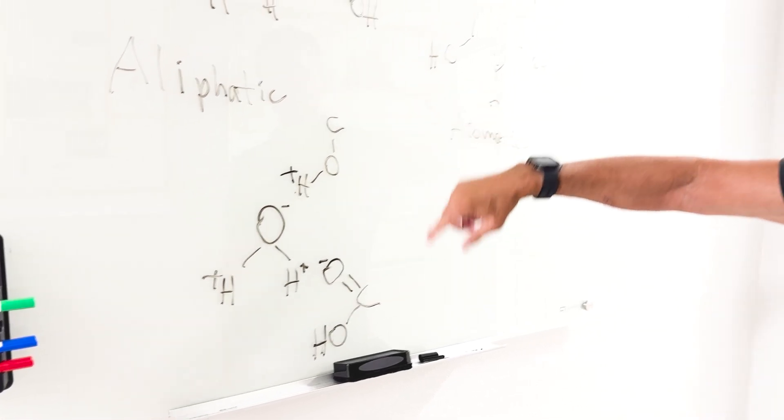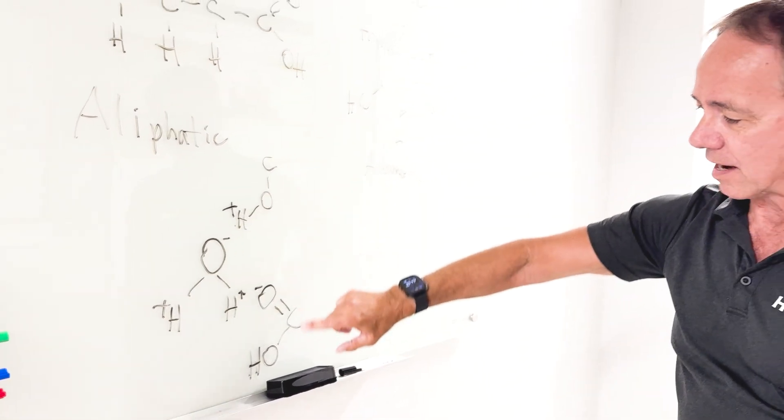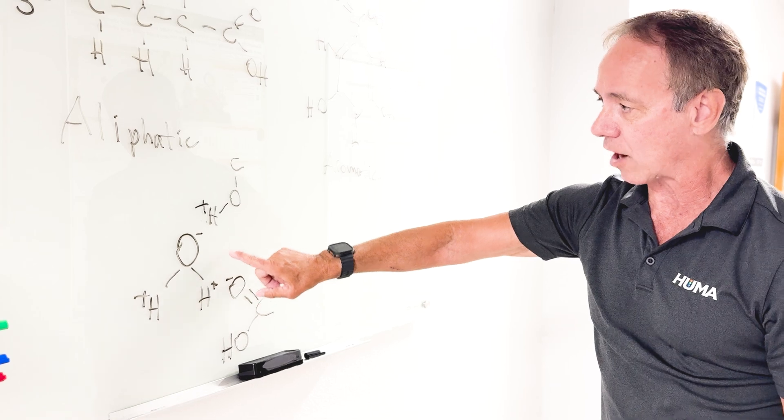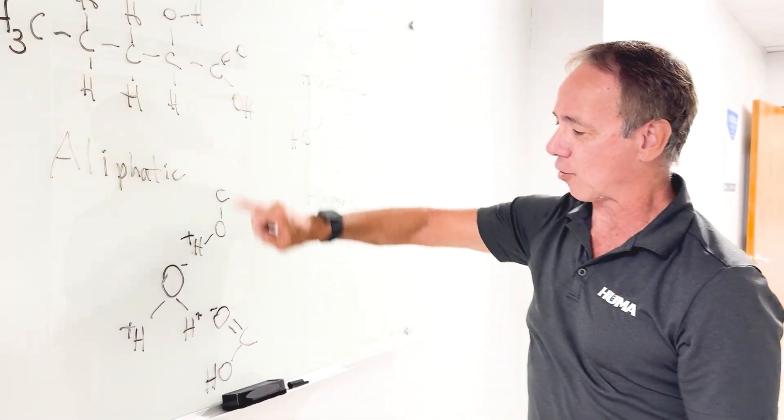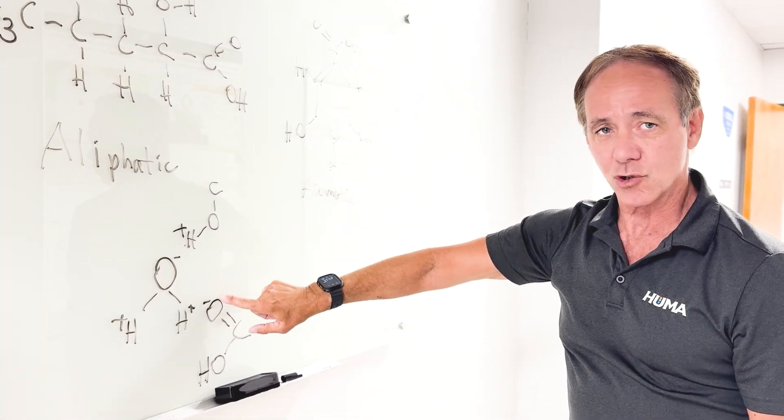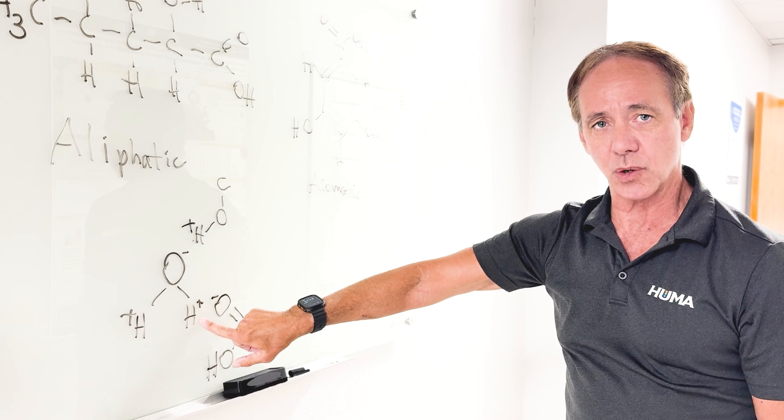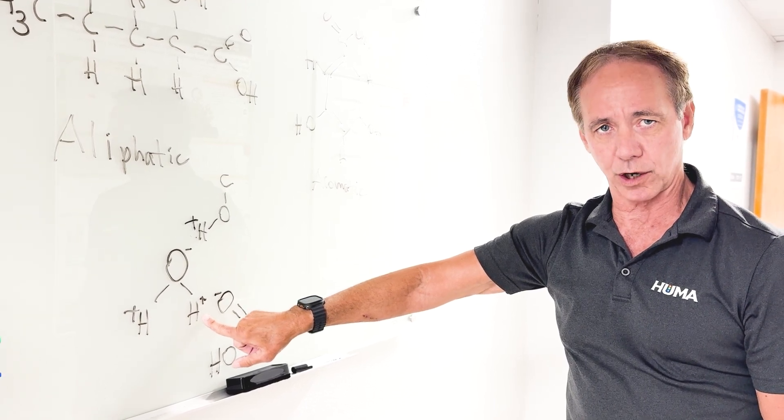Well, these functional groups in humic materials, as I've shown here, the phenolic hydroxyl, the alkalic group, the negative charge on the oxygen can bind to the hydrogen, positive charge in water.